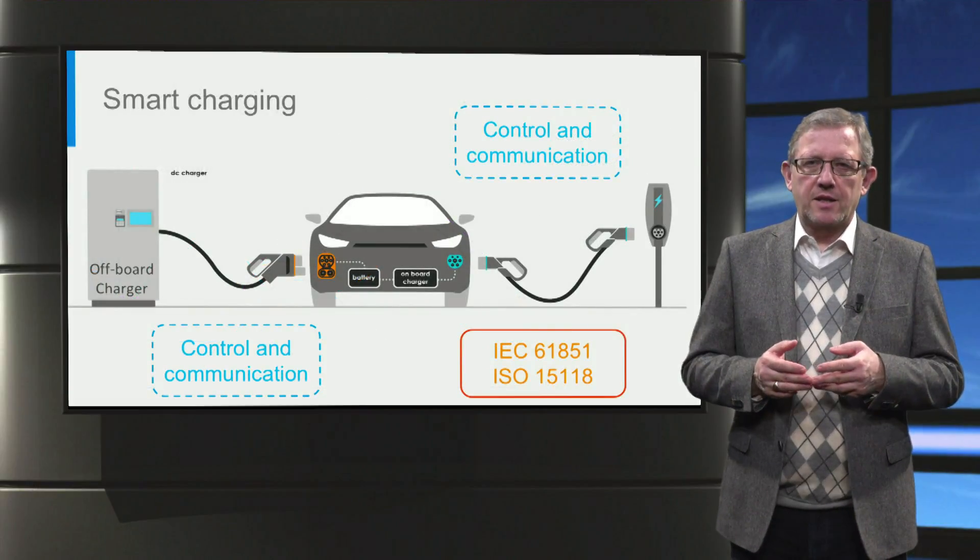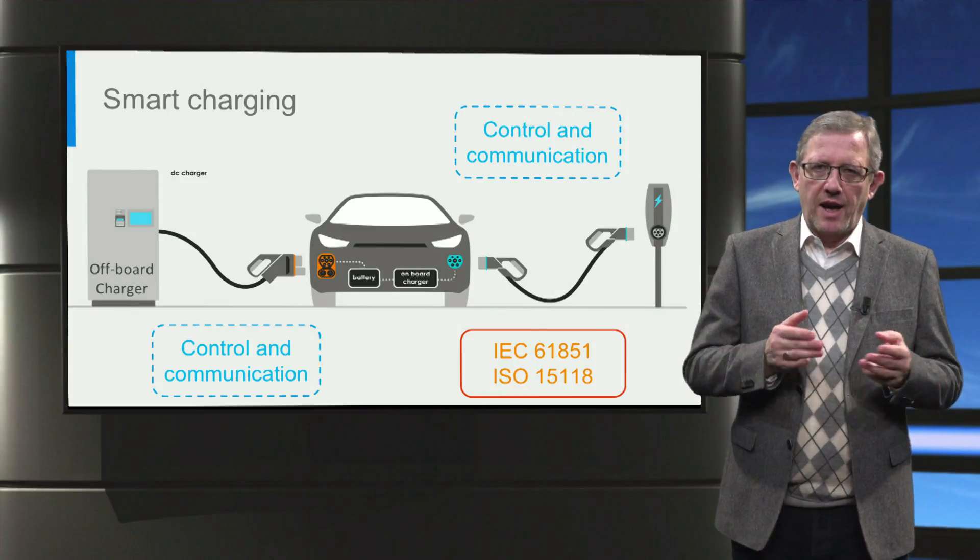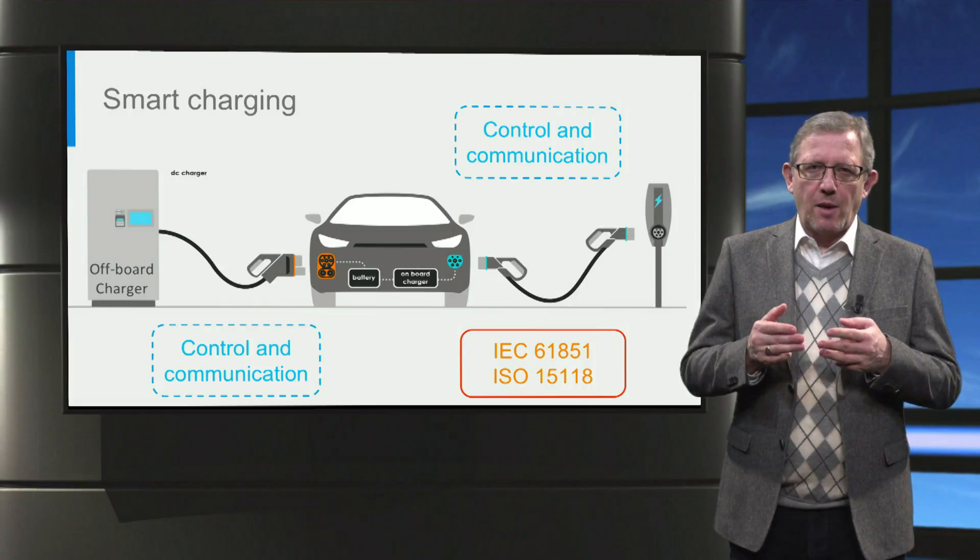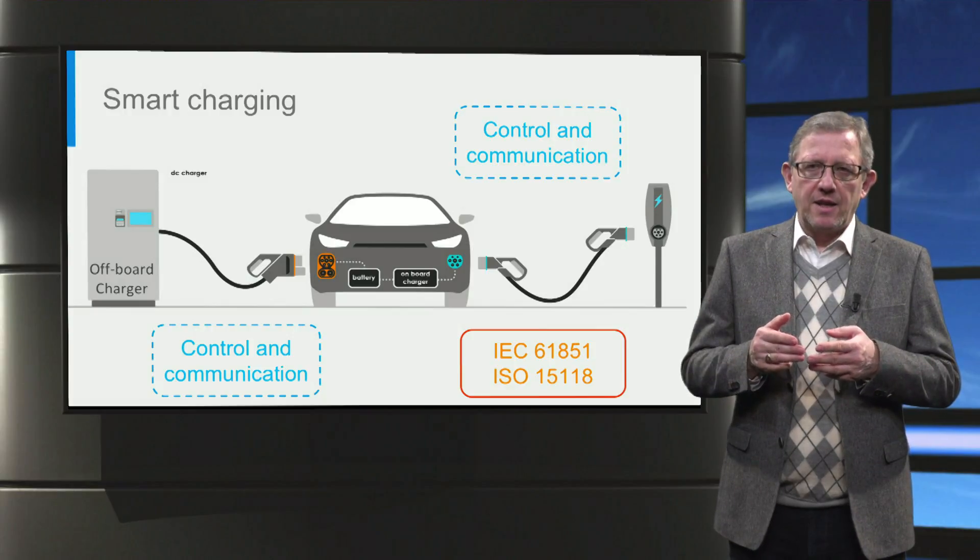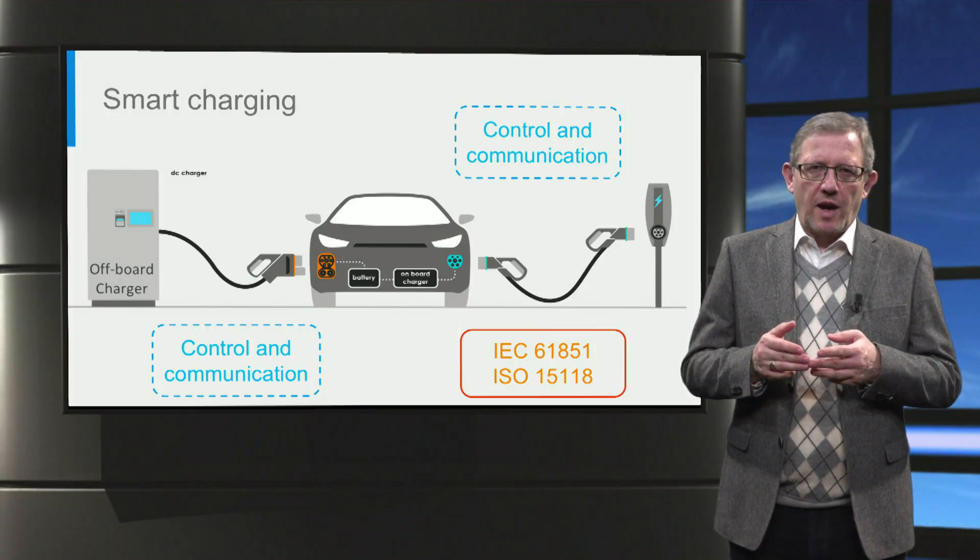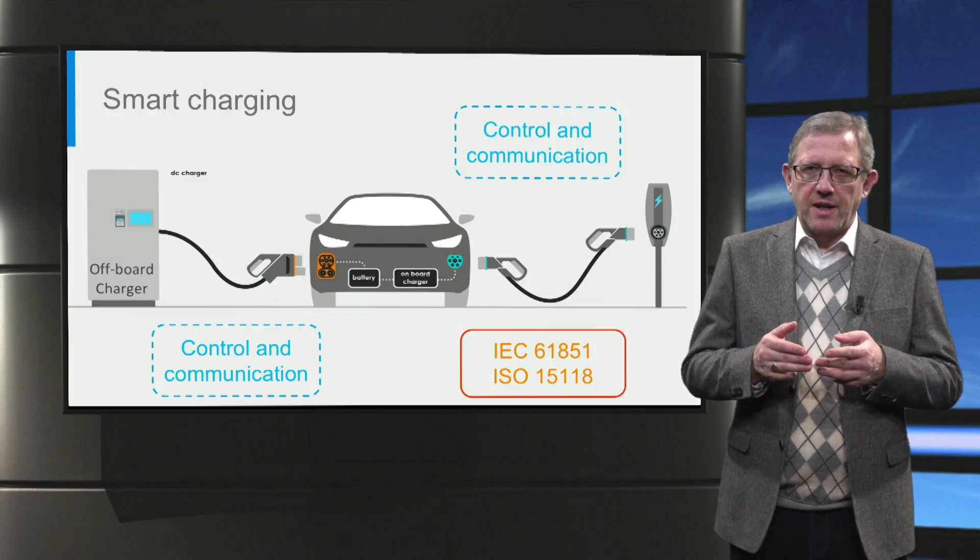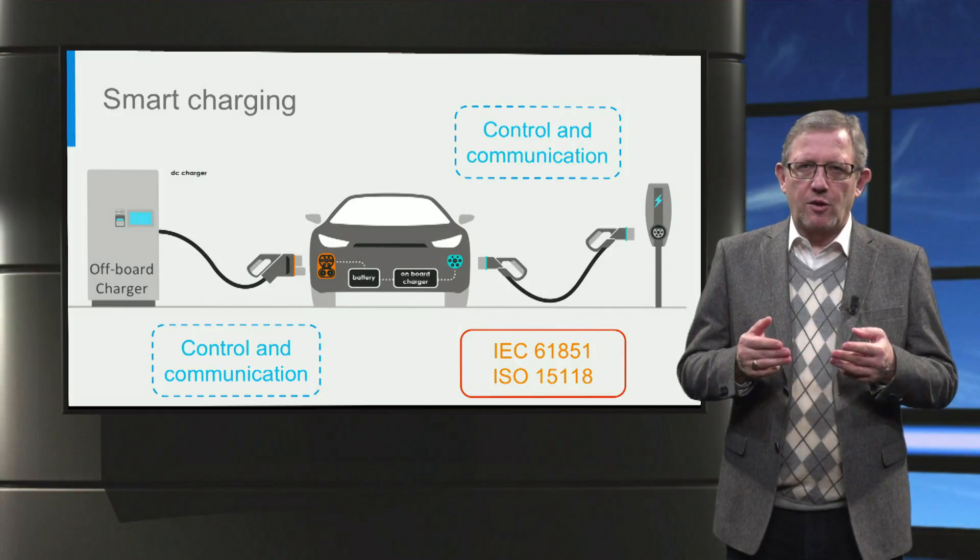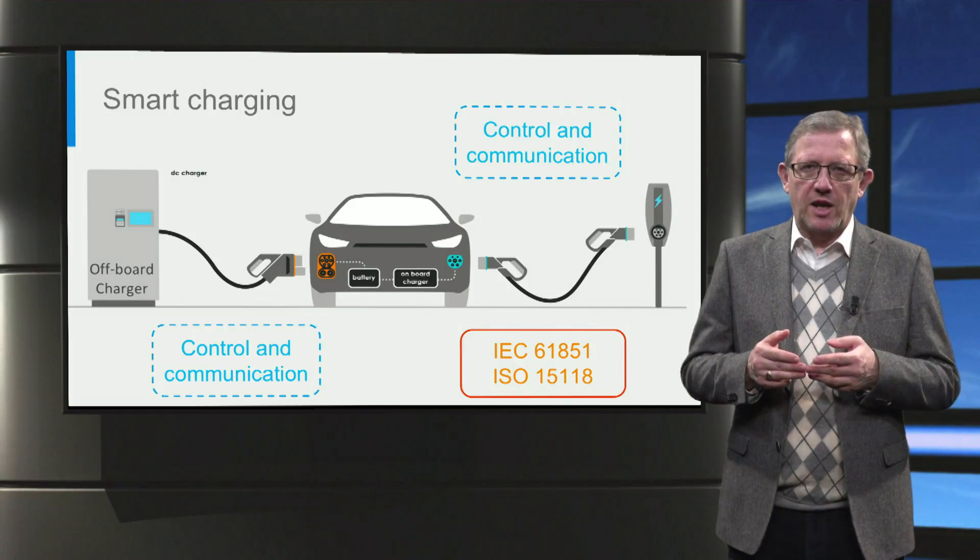Finally, let us look at how smart charging is implemented. In case of both AC and DC charging, control and communications are established between the electric vehicle and the charging station using protocols like IEC 61851 and ISO 15118. Through this, the charging current can be continuously controlled in time and in magnitude to cater the different smart charging applications.